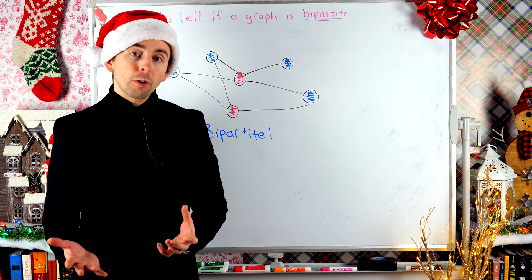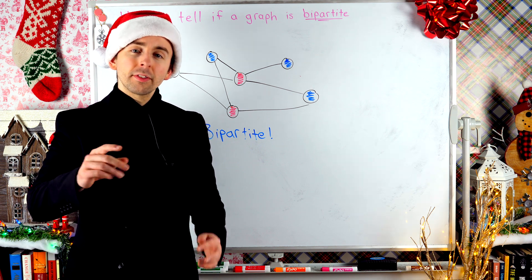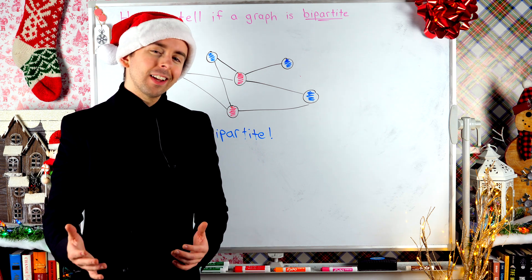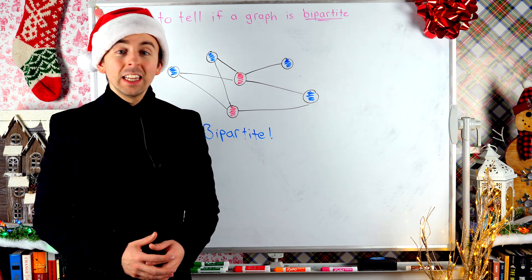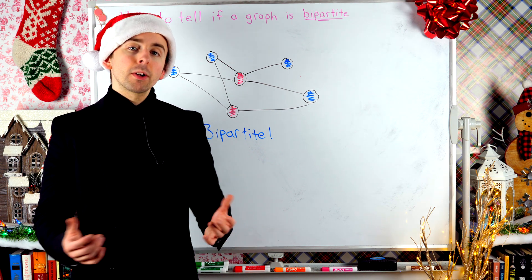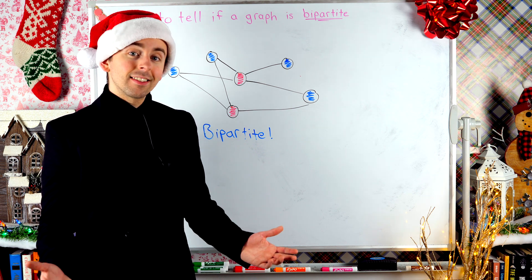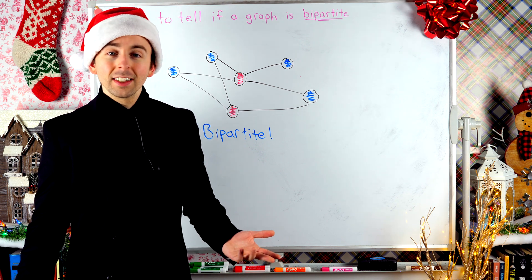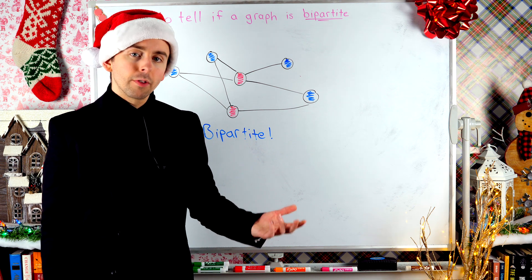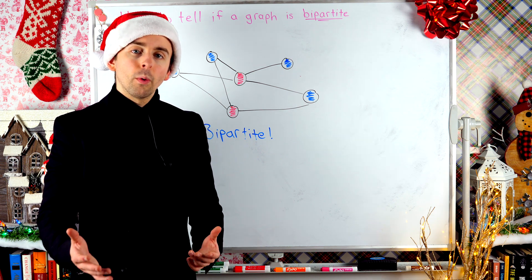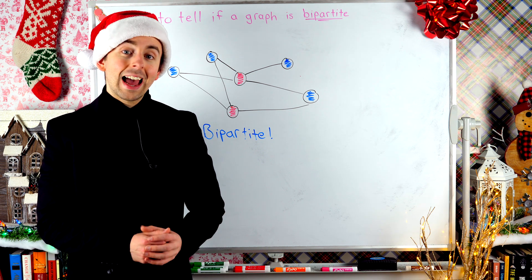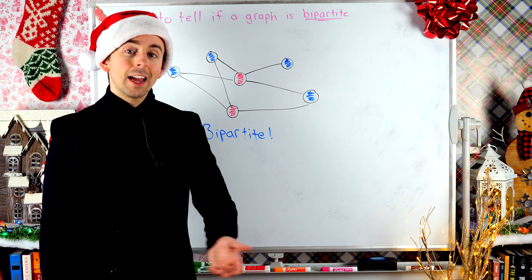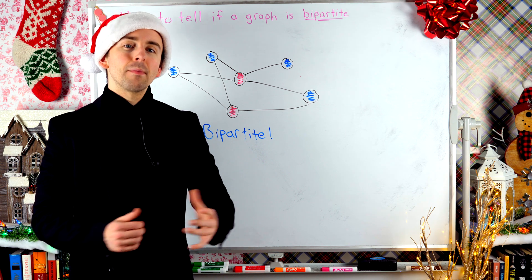There's just one vertex left. It's adjacent to a red vertex, so it has to be blue. I'll check for any problems — I don't see any. I was able to color this graph without giving adjacent vertices the same color, so this graph is indeed two-colorable, which means it is bipartite. We partitioned the vertices into two sets — the red set and the blue set — where vertices in the same set are not adjacent. That's the easiest way to determine if a graph is bipartite by hand: first check for triangles, then use the forced-coloring method.